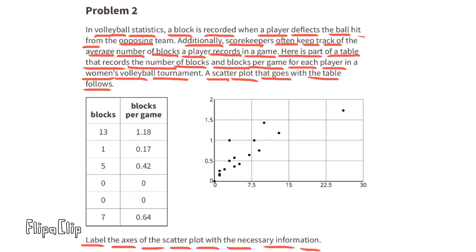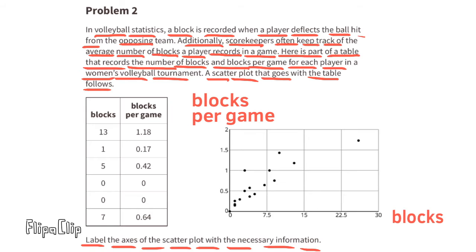We have a horizontal axis and a vertical axis. Since the horizontal axis goes up to 30 and the vertical axis only goes up to 2, the horizontal axis could be labeled as blocks and the vertical axis could be labeled as blocks per game.